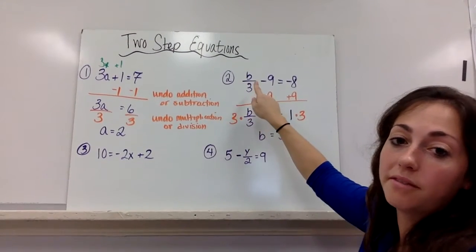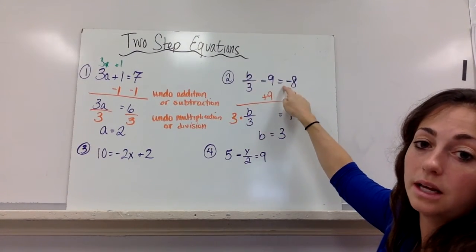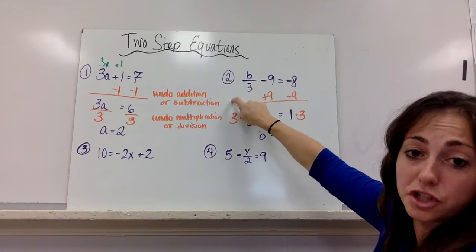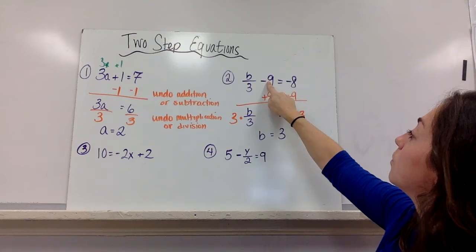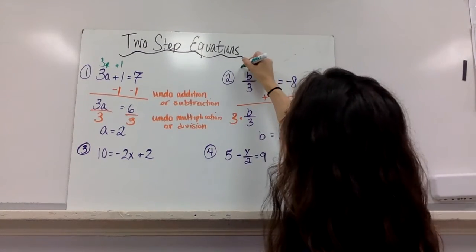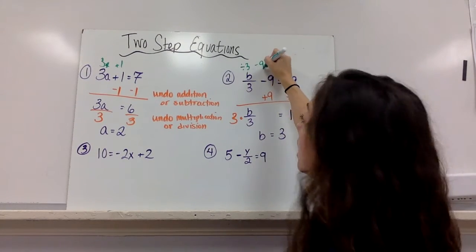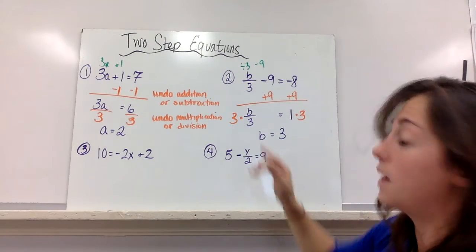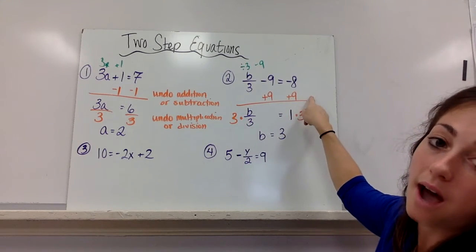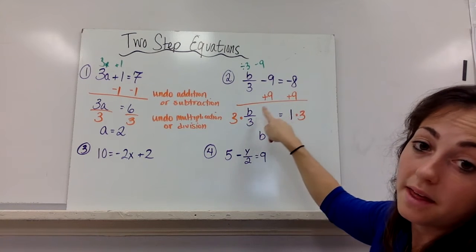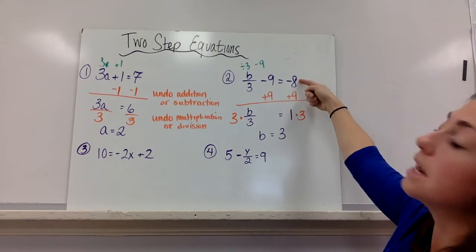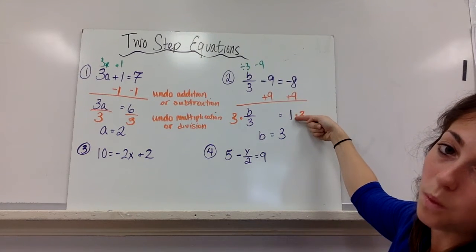Here number 2, I have b divided by 3 minus 9 equals negative 8. I've got to undo my addition or subtraction. What's happening to the variable? It's being divided by 3 and subtracted by 9. Which one first? Take care of that negative 9. I add 9. The opposite of minus 9 is plus 9. Then I get b divided by 3 equals 1, because negative 8 plus 9 is 1.